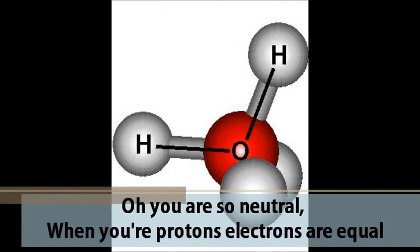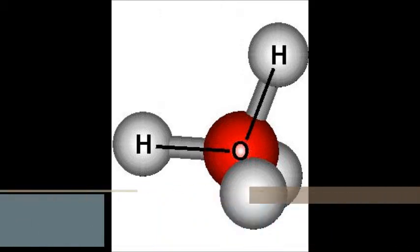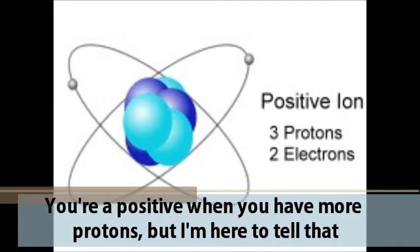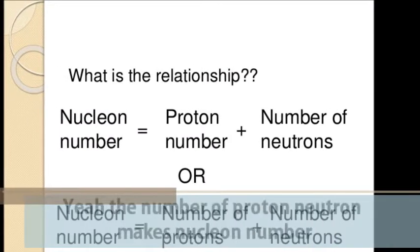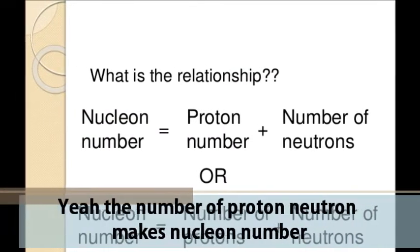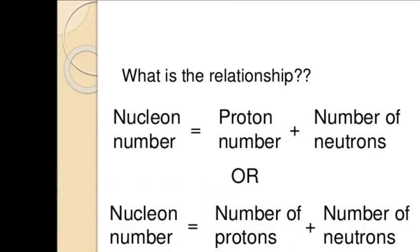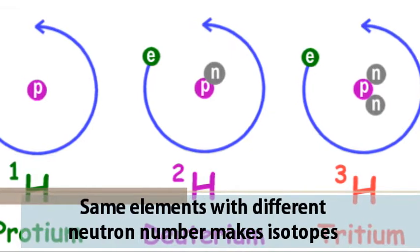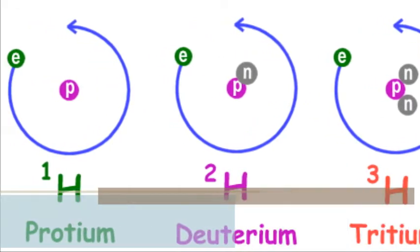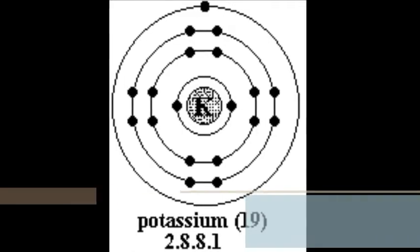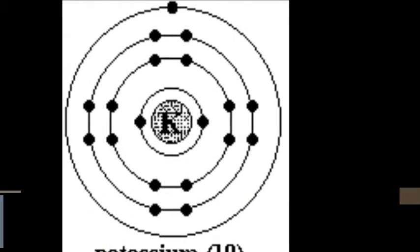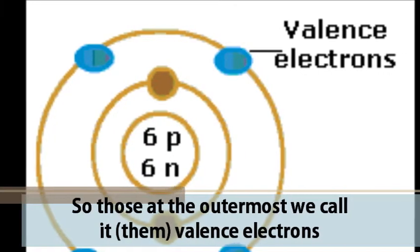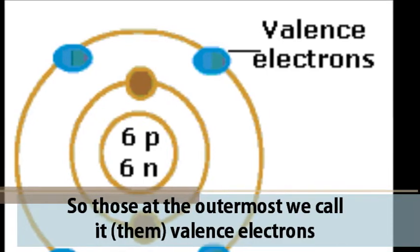Oh, you are so neutral when your protons and electrons are equal. You're positive when you have more protons. But when you have more electrons, you're negative. The number of protons and neutrons makes the nucleon number. Same elements with different neutron numbers make isotopes. The first shell can hold 2 while the rest can hold 8 electrons. Those at the outermost we call valence electrons.